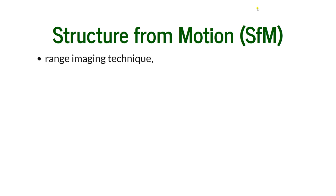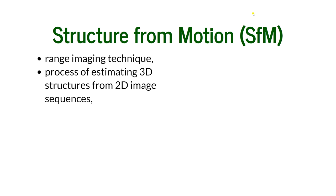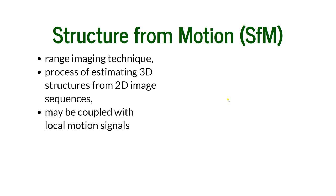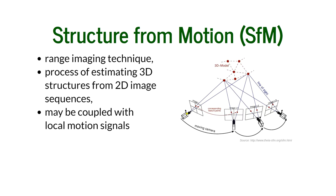A short reminder of structure from motion, which was discussed at length in the last lecture: it is a range imaging technique that describes the process of estimating 3D structures from 2D image sequences, and may be coupled with motion signals. The camera is moving and taking pictures of a structure. The same points appear on multiple image planes, and thanks to that, the collinearity equation can estimate the location of those points in 3D.